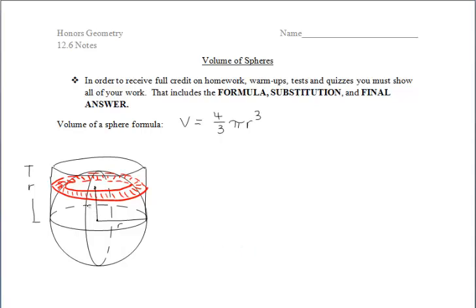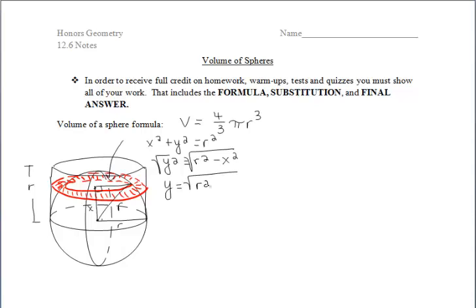He asked, can we maybe find the area of that ring? He recognized that we could create a right triangle here. At some height x, we have that ring, and we can also construct another radius going to the outer edge of the smaller circle. To find the radius of that smaller circle — since we know the radius of the larger circle is r — we use the Pythagorean theorem, using y for that radius. We get that the radius of the smaller circle is √(r² − x²).